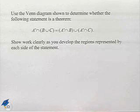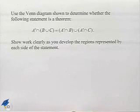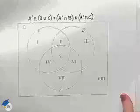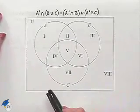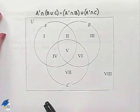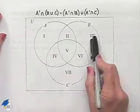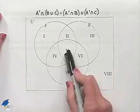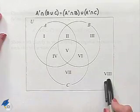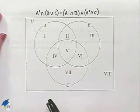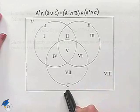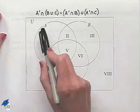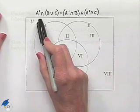Here's the Venn diagram we're going to use. We notice that we have regions designated as 1, 2, 3, 4, 5, 6, 7, and 8, and we have our three sets A, B, and C. We're going to begin with the left-hand side of the statement.